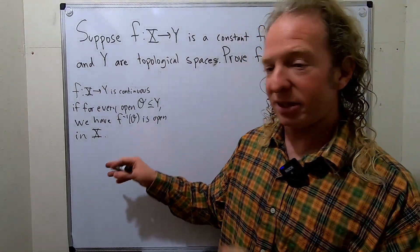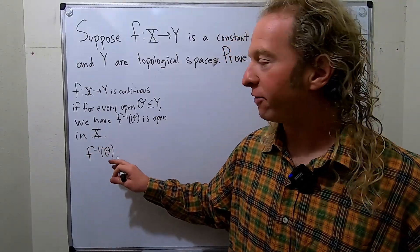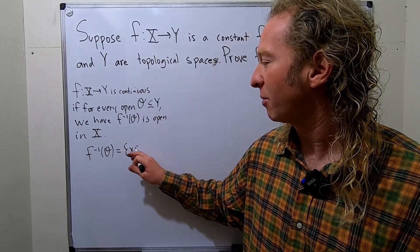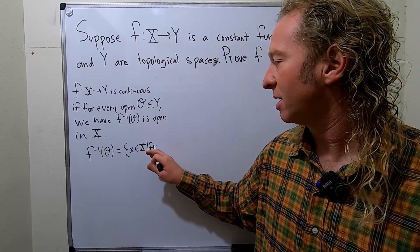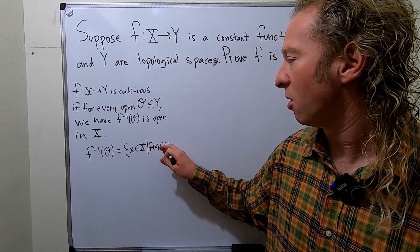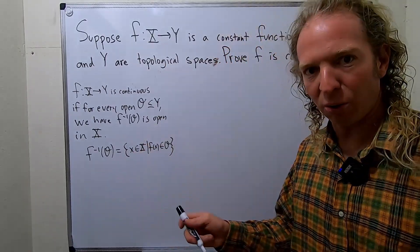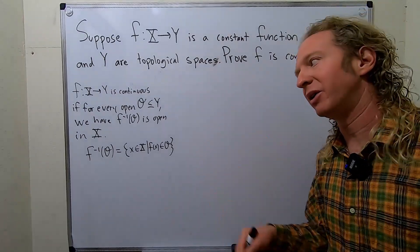So what is this? So let me recall, this is the inverse image of O under f. This is the set of all of the elements x in capital X, such that f of x is actually an element in O. So it's a set of all x's that get mapped to O. In other words, f takes those x's and sends them to y values that live inside O.